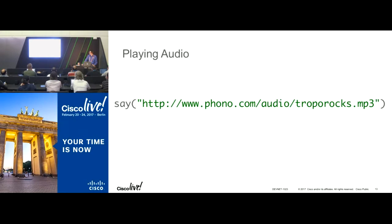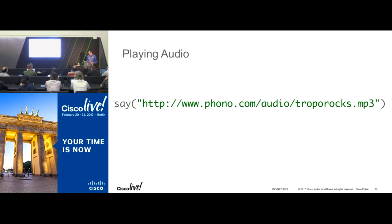You can also just play an audio file. Instead of putting in words for the computer to speak, you just put a URL to where you're hosting an audio file like an MP3 or WAV file. Tropo will render the audio file right in our data centers and play it over the phone.